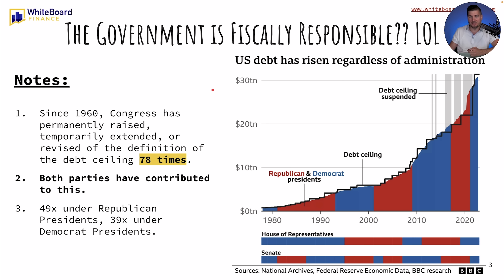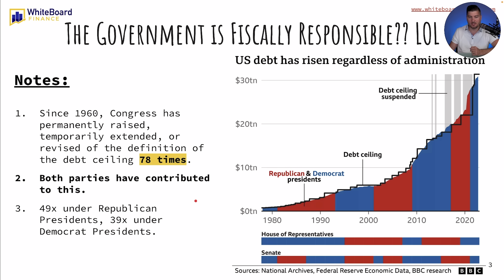For anybody that goes into this kind of politically heated — I mean, all the stats are here. It doesn't matter if you're red, blue, Coke, Pepsi, AT&T or Verizon. It's all pretty much the same. You can see Republican and Democrat presidents. Since 1960, Congress has acted 78 times to permanently raise, temporarily extend, or revise the definition of the debt ceiling — 78 times. Both parties have contributed to this: 49 times under Republican presidents, 39 times under Democrat presidents. You can pause the slide here, but we have a lot of information.